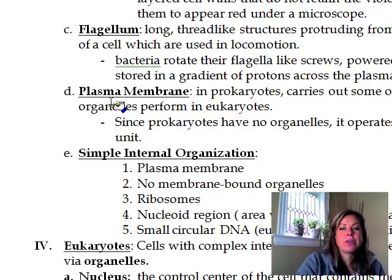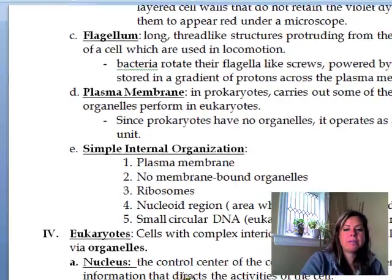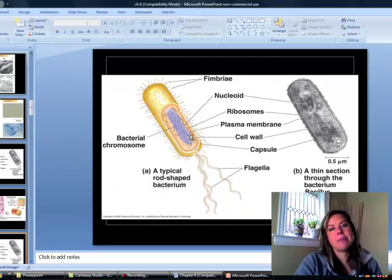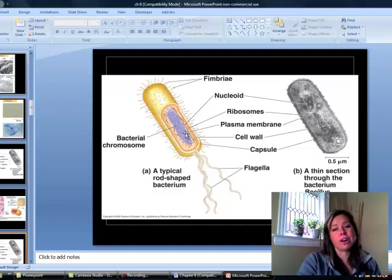Another one is the plasma membrane. In prokaryotes, if you look at this picture, there's really not much inside. What that means is that cell membrane is going to have to do a lot of work in order to make the cell function. So the cell membrane in a prokaryote tends to have a little bit more functional abilities.